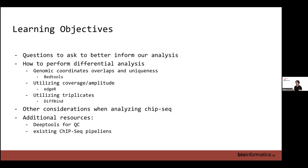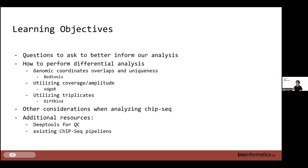For handling triplicates, the main one I'll be going over is the DiffBind R package. I also want to take time to highlight other considerations when analyzing ChIP-seq data, since it's not always as straightforward as we'd like, and to highlight additional resources such as deepTools for QC or generating plots, and existing ChIP-seq pipelines you can leverage.